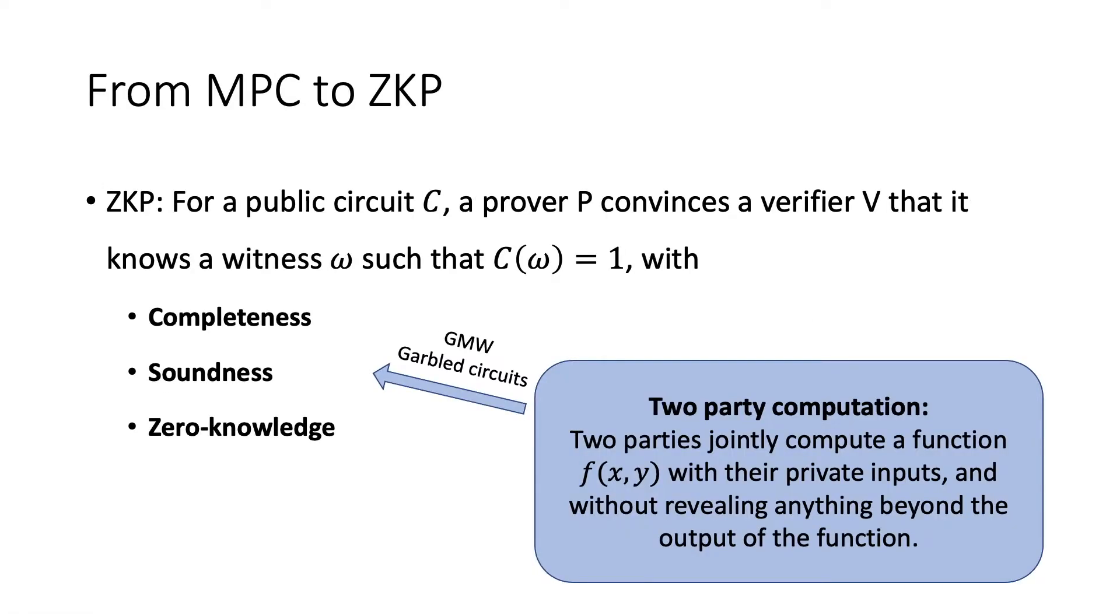Now let me give you an intuition of our protocol design. We have already seen the definition of zero-knowledge proofs. Now let me remind you the definition of two-party computation in the MPC setting. Two parties Alice and Bob jointly compute a function f with their private inputs x from Alice and y from Bob. They compute this function without revealing anything beyond the output of the function. The two-party computation requires privacy and correctness, and there are ways to make the protocol secure against malicious adversaries. We can immediately see that if we compute the circuit of zero-knowledge proof with the way we do in two-party computation, a lot of requirements would already be preserved.